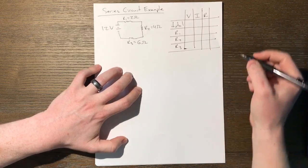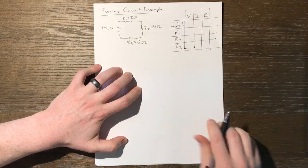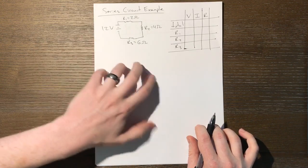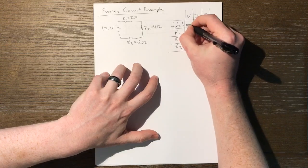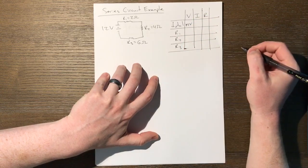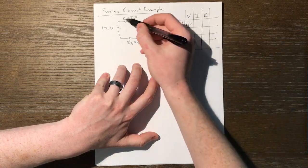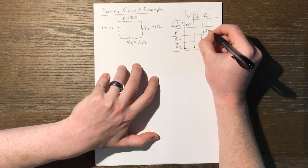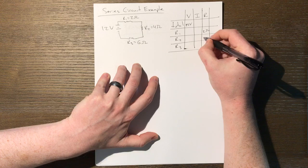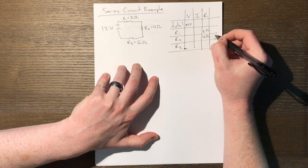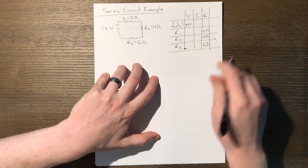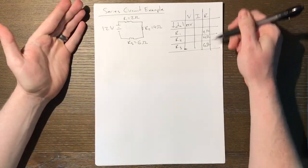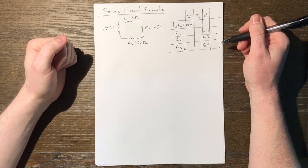So let's start populating our data table. Let's start filling in the information we already know. Well, we know the battery voltage. We know the total voltage. That's 12 volts. We also know some of the resistances. R1's resistance is 2 ohms. R2's resistance is 4 ohms. And R3's resistance is 6 ohms. So that's our given information already listed in our data table.